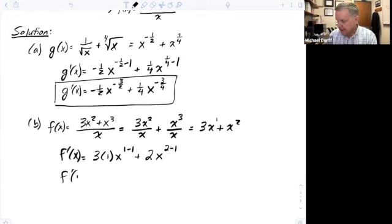And then finally, I can simplify that. 3 times 1 is 3. x to the 1 minus 1. 1 minus 1 is 0. x to the 0 is just 1. So that's just going to stay as 1. So 3 times 1 is 3. Then for the second term, I have 2, and then x to the 2 minus 1 power, which is just 2x.